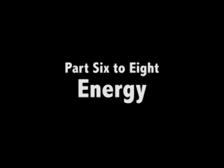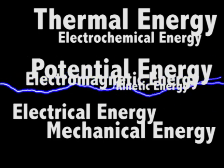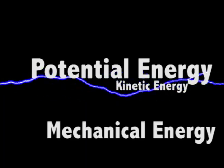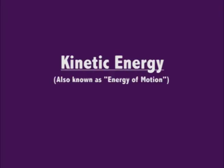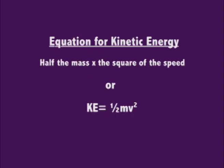Parts 6 through 8: Energy. Energy is a core focus in not just physics, but all of science. There are several types of energy, but the three most well-known types are kinetic, potential, and mechanical energy. Kinetic energy is also known as energy of motion. It is energy that is capable of doing work. It is equal to half the mass multiplied by the square of the speed, or KE equals one-half mv squared.